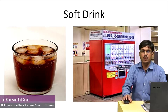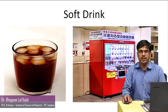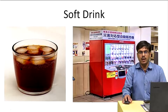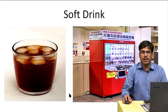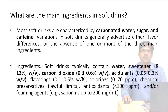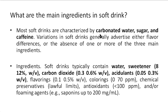Soft drinks — you are all very well acquainted with soft drinks. It is a very common beverage consumed in India and all over the world. What are the main ingredients in soft drink? Most soft drinks contain carbonated water, sugar and caffeine. Other things include sweeteners, carbon dioxide, acidulants, flavoring agent, coloring agent, preservatives and antioxidants.